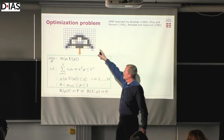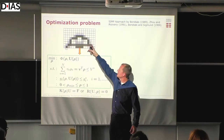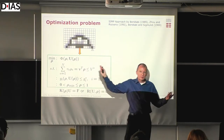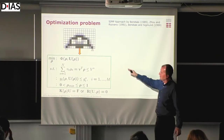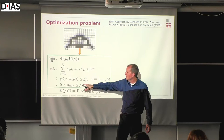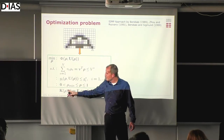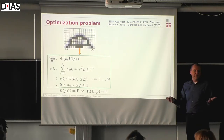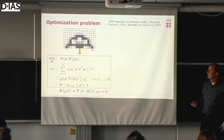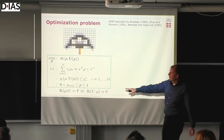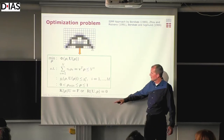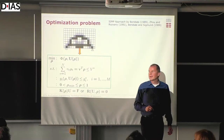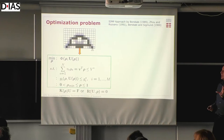Mathematically stated, we have a vector of design variables rho — the densities in each pixel. We optimize some objective function, it could be compliance, the inverse of stiffness. We have volume constraints and other constraints that depend on either density variables or the state — which here are displacements computed from analysis, but later could be the electric field, fluid velocity, or something like that. These PDEs — partial differential equations — can usually be described by some kind of linear or nonlinear system.